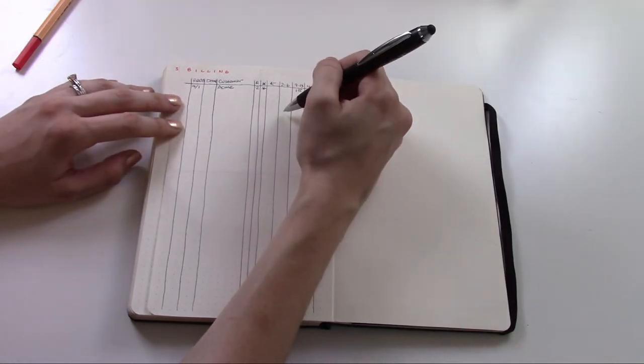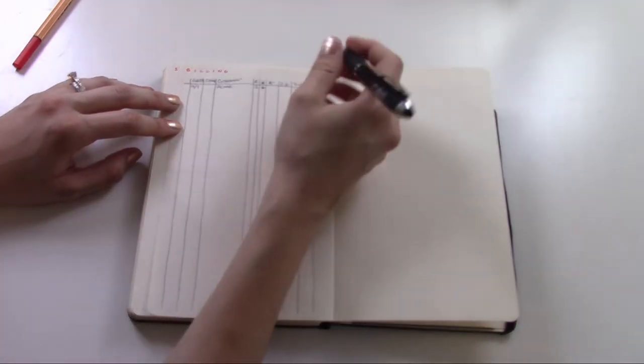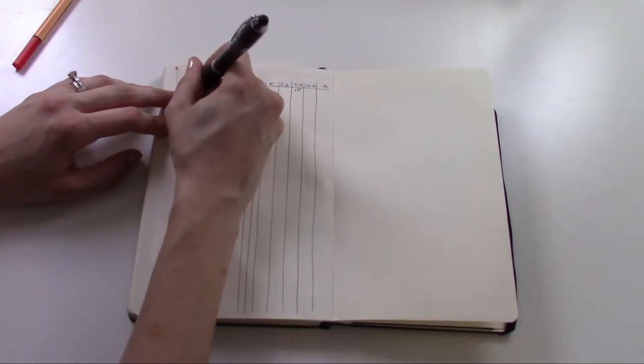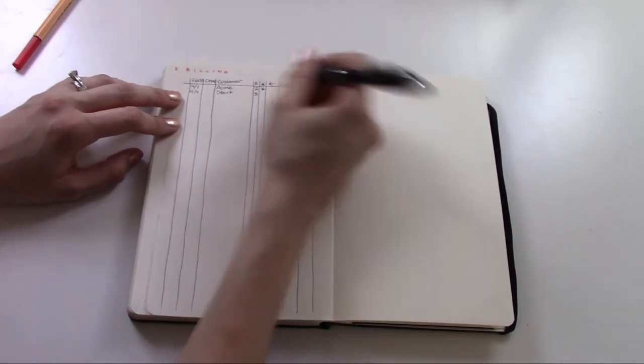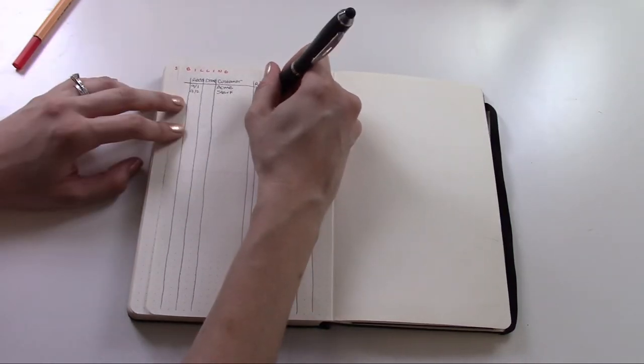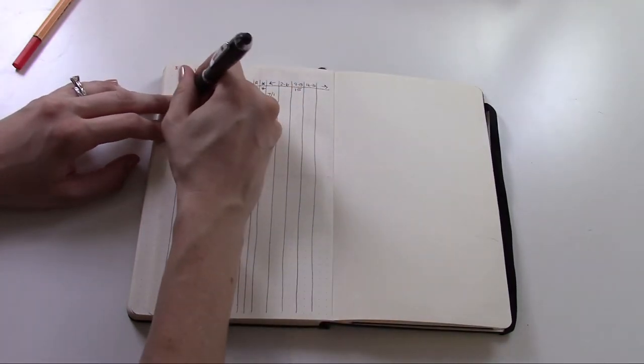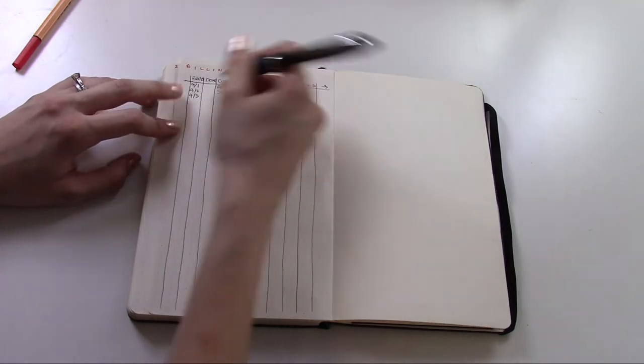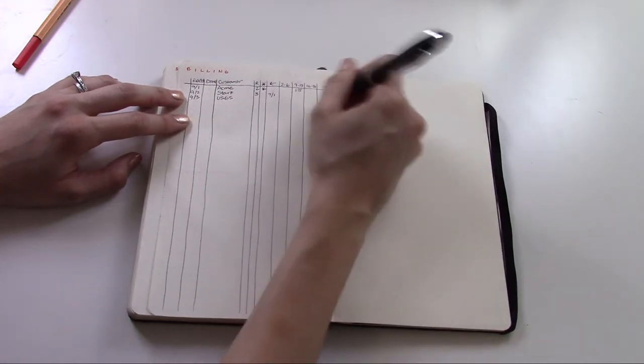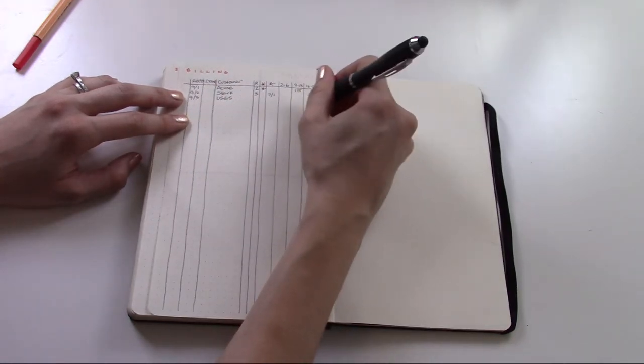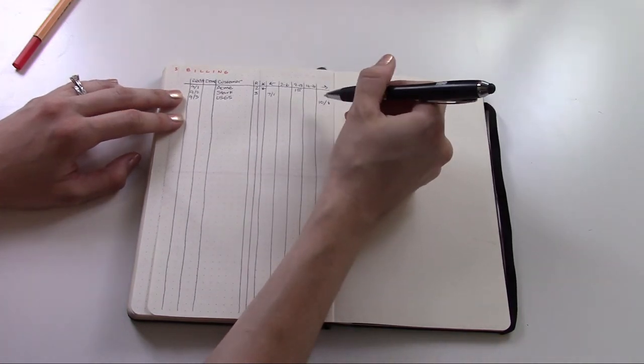The first column will be for the current week that I'm starting on this particular spread. And then if anything comes in that's late, say the next day I get something in that's past due, like say it was supposed to renew back in July, that goes on this arrow. And then the next day something comes in that's really early, say it'll renew in October, then that goes in the arrow this direction.